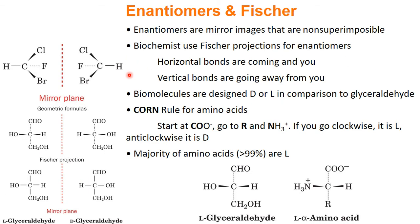Mirror images that are not superimposable are called enantiomers. For example, take a molecule with carbon bonded to chlorine, fluorine, bromine, and hydrogen. If you take the mirror image of this compound, you cannot superimpose it on itself — we call these enantiomers.